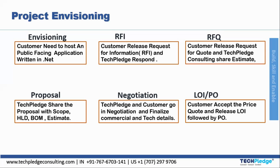After that comes the Negotiation phase. Negotiation is where TechPlace and the customer negotiate and finalize the commercial and technical details. Once the proposal is accepted, the customer agrees to go with TechPlace's proposal, and both parties move to the negotiation table where all commercial details and technicalities are finalized.